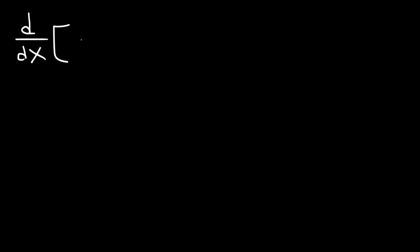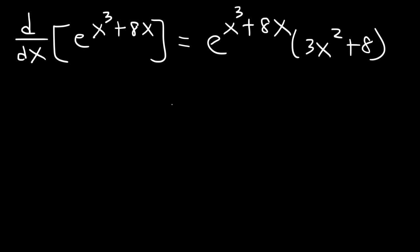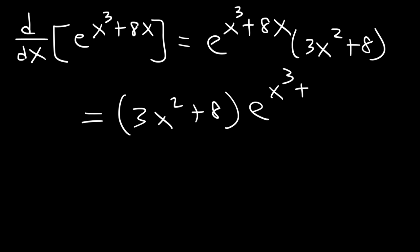Let's work on a similar problem. Find the derivative of e raised to the x cubed plus 8x. It's going to be e raised to the x cubed plus 8x times the derivative of the exponent. The derivative of x cubed is 3x squared, and the derivative of 8x is 8. So the answer is 3x squared plus 8, times e raised to the x cubed plus 8x.